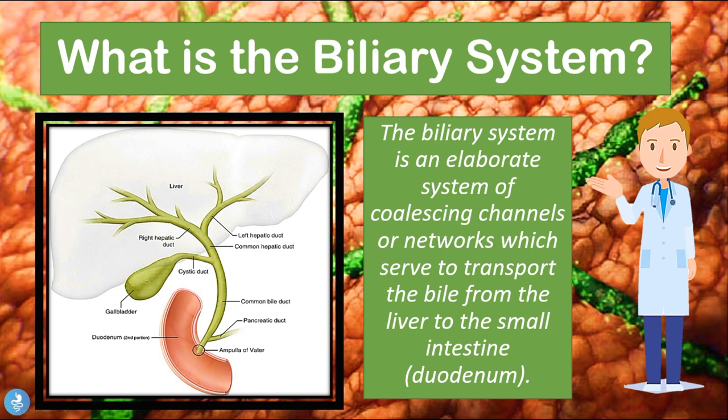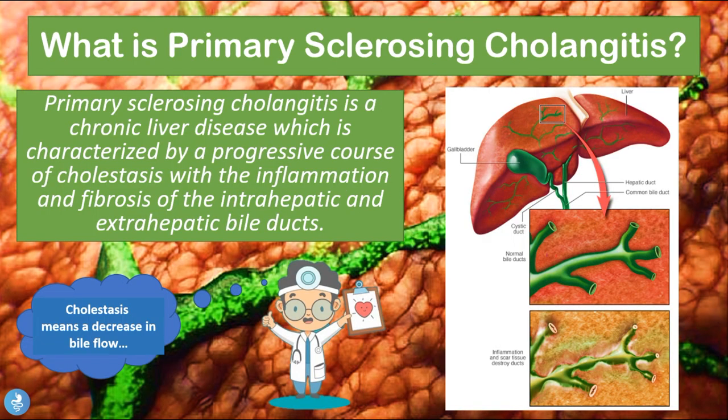Now let's take a closer look at what primary sclerosing cholangitis is. Primary sclerosing cholangitis is a chronic liver disease which is characterized by a progressive cause of cholestasis with the inflammation and fibrosis of the intrahepatic and extrahepatic bile ducts.